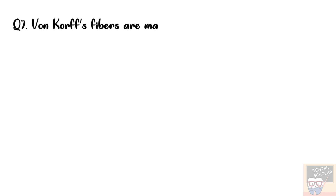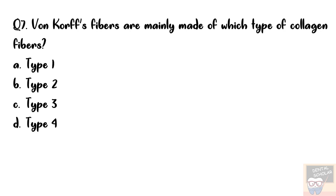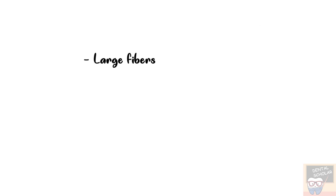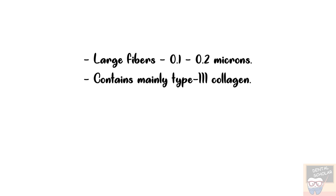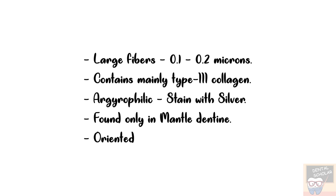Question number 7: Von Korff fibers are mainly made up of which type of collagen fibers? Options are type 1, type 2, type 3, and type 4. The correct answer is option C, type 3. Von Korff fibers are the largest fibers in dentine, with a diameter of about 0.1 to 0.2 microns, and contain mainly type 3 collagen. They are argyrophilic, meaning they stain with silver. They are found only in the mantle dentine and are oriented perpendicular to the DEJ (dentino-enamel junction).